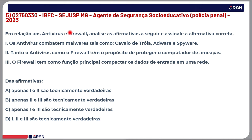Questão de número 5. Em relação aos antivírus e firewalls, analise as afirmativas: 1) Os antivírus combatem malwares, tais como Cavalo de Troia, Adware e Spyware. 2) Tanto o antivírus quanto o firewall têm o propósito de proteger o computador de ameaças. 3) O firewall tem a função principal de compactar os dados de entrada em uma rede. Cuidado — às vezes pode ser falso.